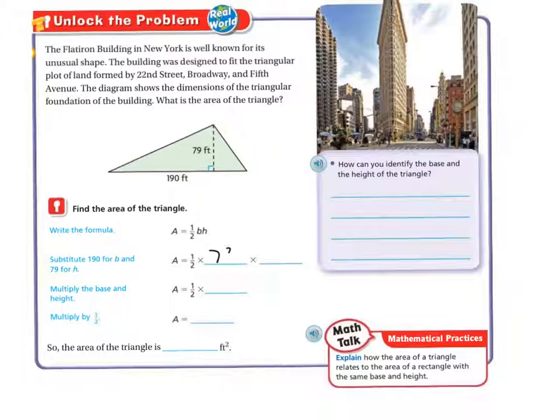So let's put that in. So we have 79 times, oh sorry, it's actually base, which is 190. And then this one is 79. Oh, I didn't do this. How can you identify the base and the height of the triangle?